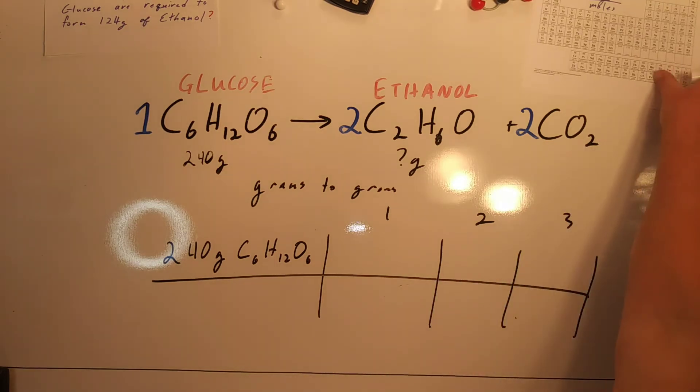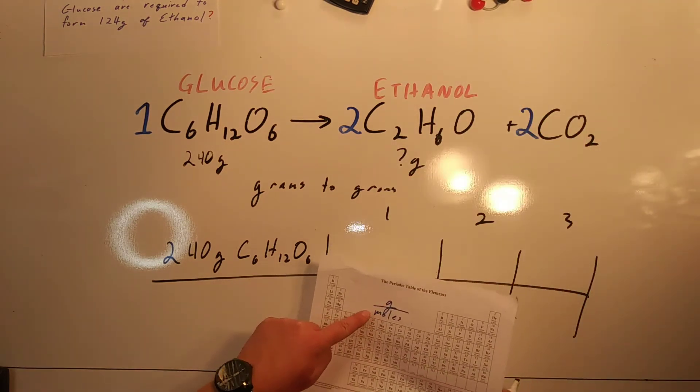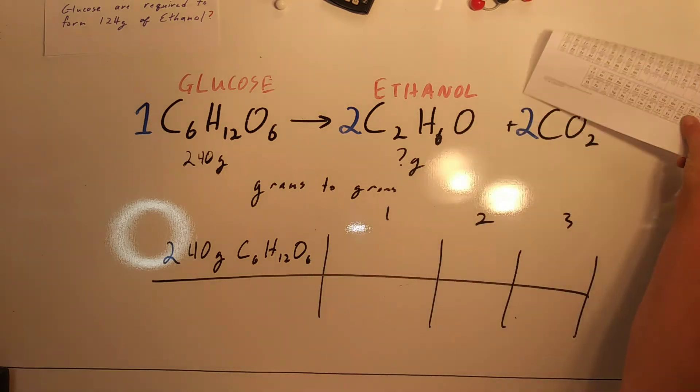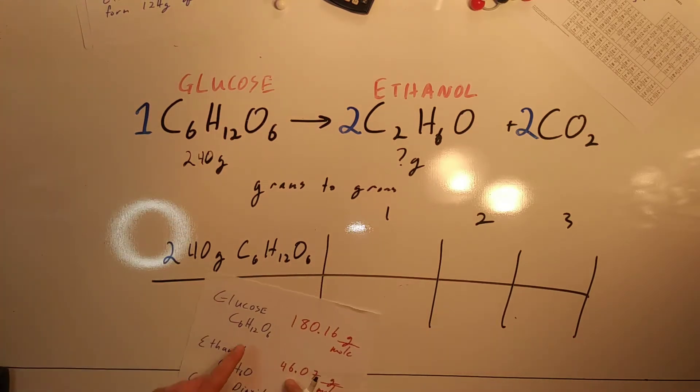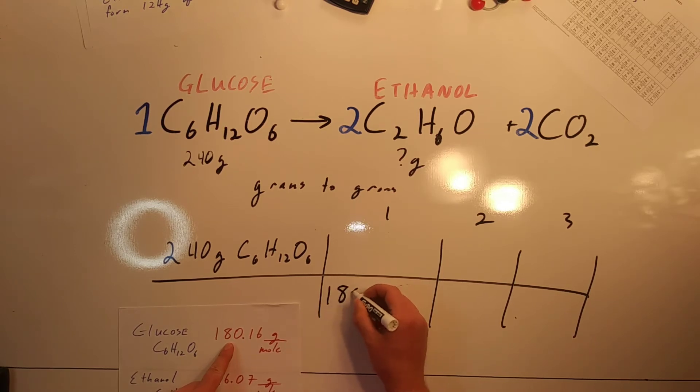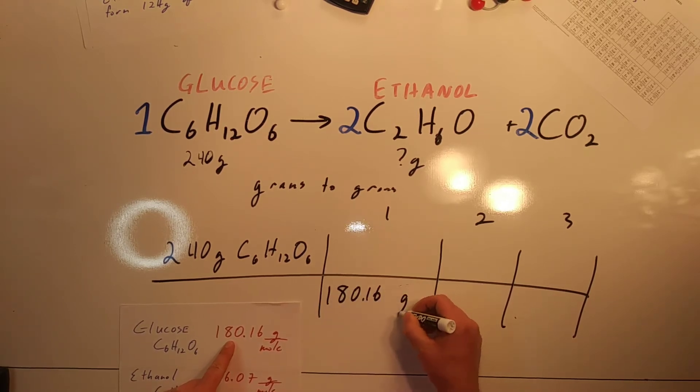The first step is using the periodic table and using these numbers that have the units grams over moles. Glucose, C6H12O6, this is the molecular weight for glucose.